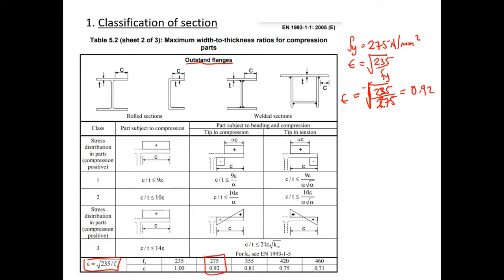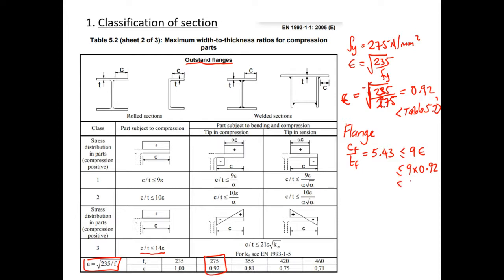For classification: if c/t ≤ 14ε it is Class 3; if greater, it is Class 4. Checking the flange: cf/tf = 5.43, which is less than 9ε = 9 × 0.92 = 8.28. This means the flange is Class 1.